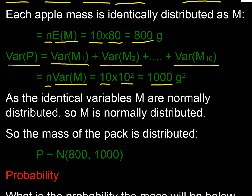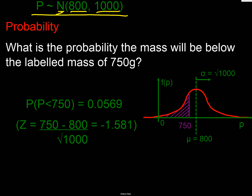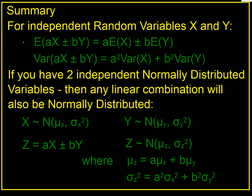Since each apple is identically and normally distributed, the packet mass is normally distributed: N(800, 1000). The probability that the packet mass is less than 750 grams — the z-value is (750 − 800) / √1000 = −1.581 standard deviations below the mean. The probability is 0.0570, so about 6%. The supermarket might be quite happy with that.